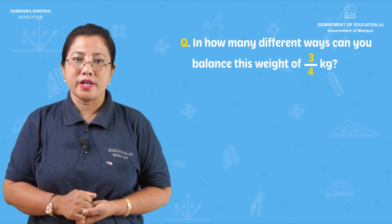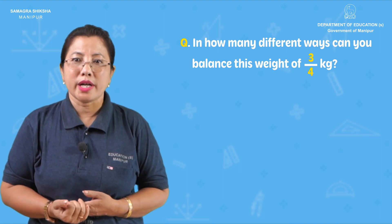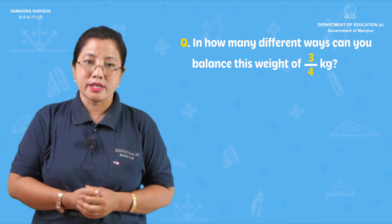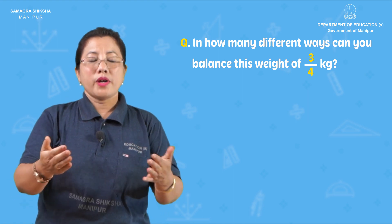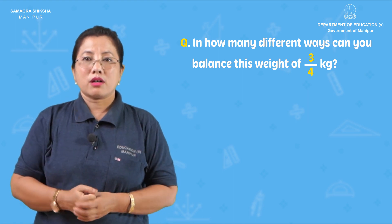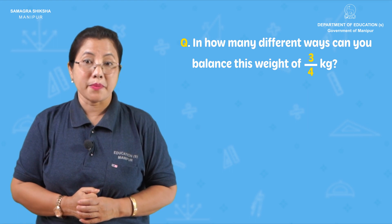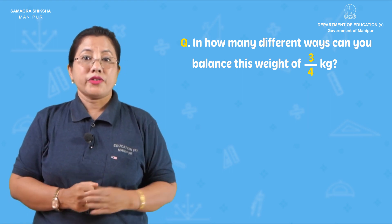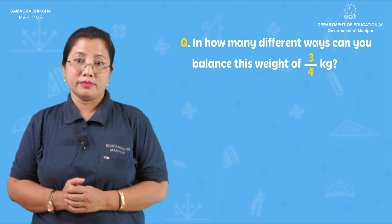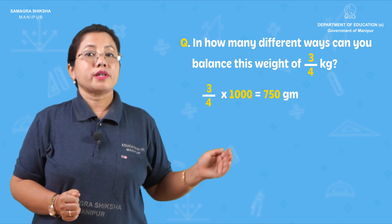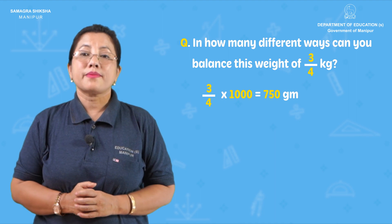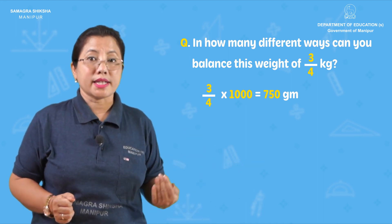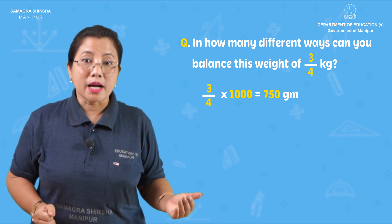In how many different ways can you balance the weight of 3 by 4 kg? Three by 4 kg is 3 by 4 into 1,000 grams, which equals 750 grams.